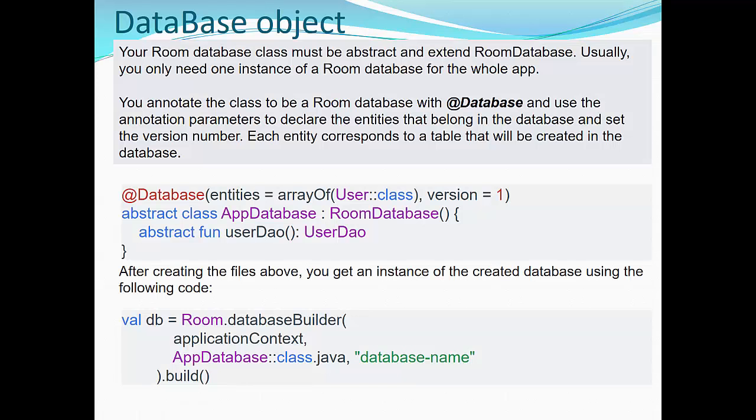And finally, the component number three is database object. Your Room database class must be abstract and extend RoomDatabase. Usually, you only need one instance of a Room database for the whole app. You annotate the class to be a Room database with @Database and use the annotation parameters to declare the entities that belong in the database and set the version number. Each entity corresponds to a table that will be created in the database. You see here, we have a database annotated class with entities which has user class as one entity. We have an array, but in this case, we have only one class, and the version number is one.